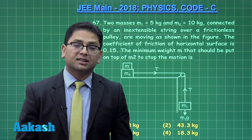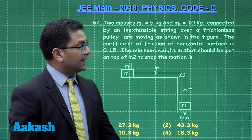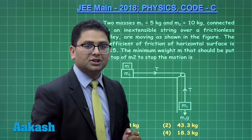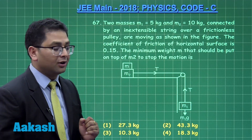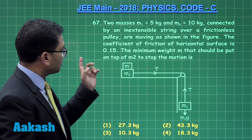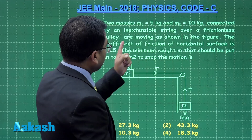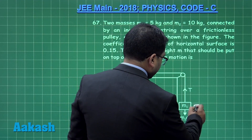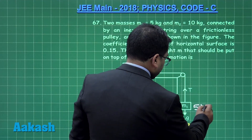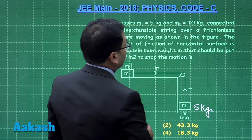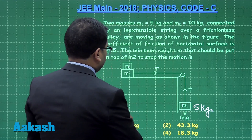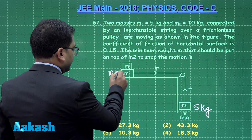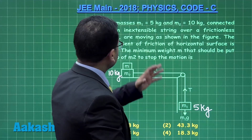Let us go with question number 67, brought from the topic laws of motion. Friction is also involved. It says two masses: m1 equals 5 kg and m2 is 10 kg.